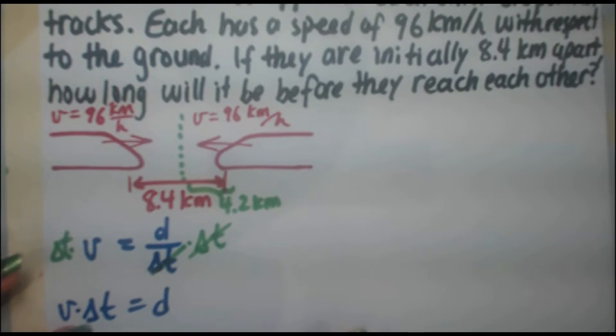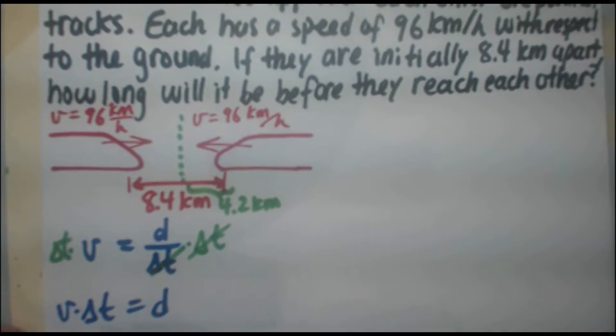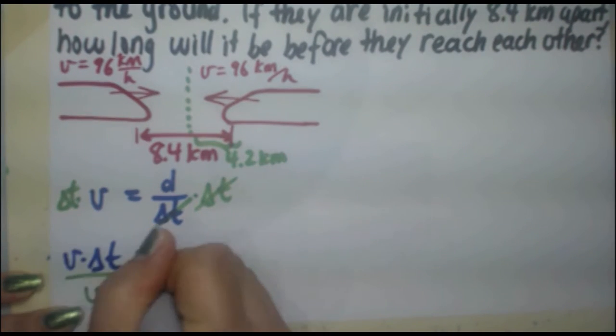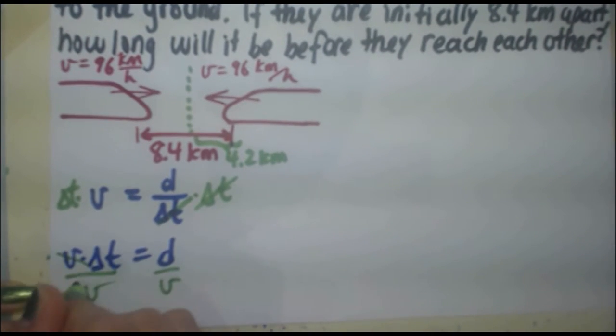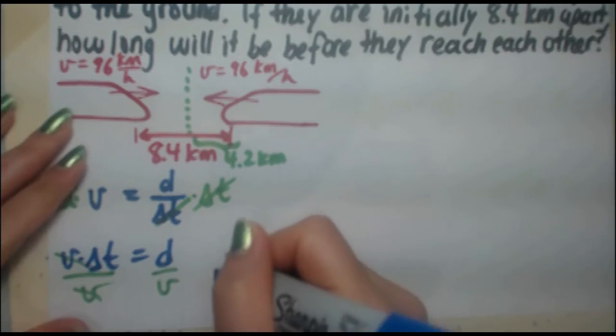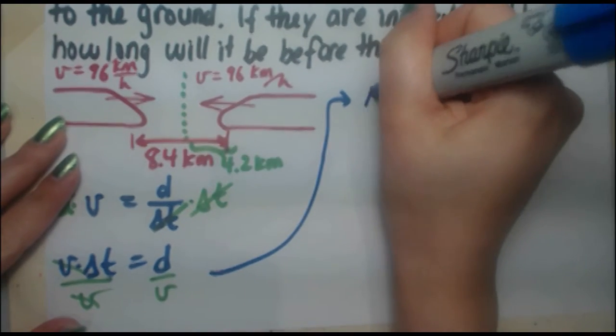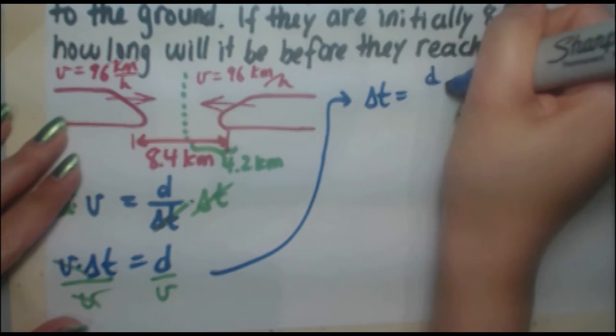You still don't have T by itself. You have to divide both sides by V to get rid of that V there. Dividing both sides by V cancels the V on the left, giving you the equation delta T equals D over V.